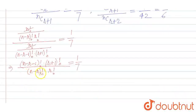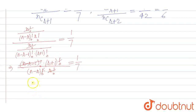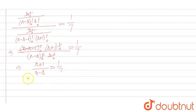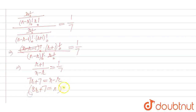Here, (n−r)! and (n−r−1)! differ by one term, so they partially cancel. Similarly, (r+1)! divided by r! simplifies. This gives us (r+1) in the numerator and (n−r) in the denominator, equal to 1/7. So we get the equation 7r+7 = n−r, which gives us 8r+7 = n. This is our first equation.